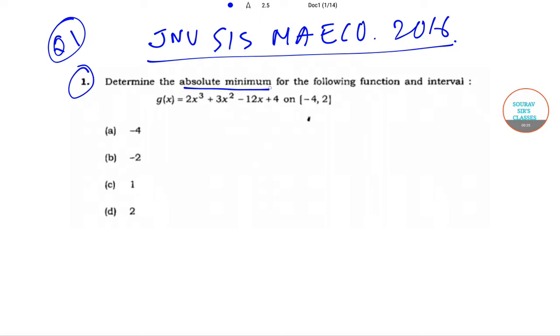In question number one, we need to determine the absolute minimum for the following function and interval: g(x) is given by 2x³ + 3x² - 12x + 4 on the closed interval [-4, 2]. The options are -4, -2, 1, and 2.